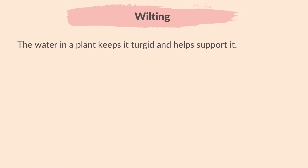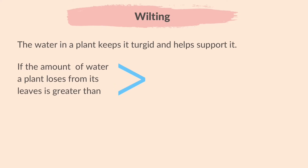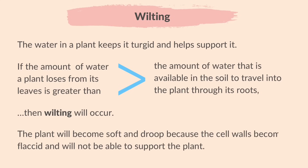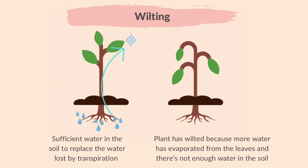Let's learn about wilting. The water in a plant keeps it turgid and helps support it. If the amount of water a plant loses from its leaves is greater than the amount of water available in the soil to travel into the plant through its roots, then wilting will occur. The plant will become soft and droop because the cell walls become flaccid and will not be able to support the plant. In the first picture, there is sufficient water in the soil to replace the water lost by transpiration. In the next diagram, the plant has wilted because more water has evaporated from the leaves and there is not enough water in the soil.